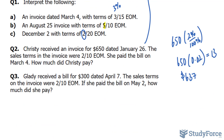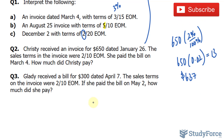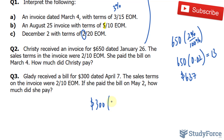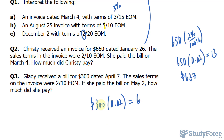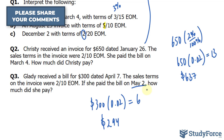The last question: Gladdy received a bill for $300 dated April 7. The sales terms on the invoice were 2-10 EOM. If she paid the bill on May 2nd, how much did she pay? She qualifies for the 2% discount because it's before May 10. We take 300 times 0.02. Using our calculator, 300 times 0.02 gives us $6. Subtracting 6 from the base value gives us $294 — that's all she has to pay if she pays on May 2nd.